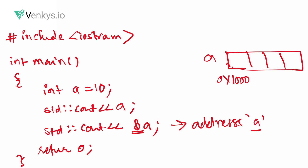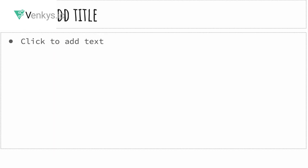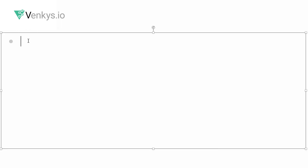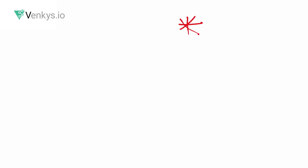The ampersand is also called the reference operator, particularly when using a copy constructor in C++. Now let's look at how the dereference operator is used. The dereference operator is your pointer symbol — the star (*) on your keyboard.